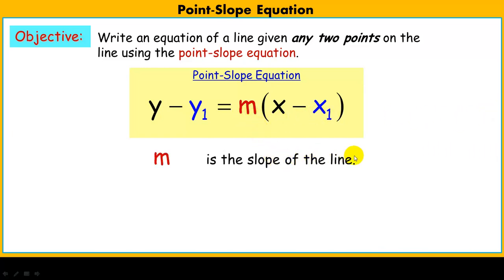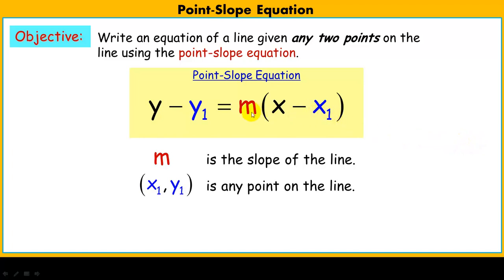This m here is the slope of the line, just like in slope-intercept — it's the slope of the line, rise over the run. And these two coordinates that I have highlighted, x sub 1 and y sub 1, are the coordinates of any point on the line, any single one. So we're going to use these two bits of information to write the equation of a line and convert it into slope-intercept form.